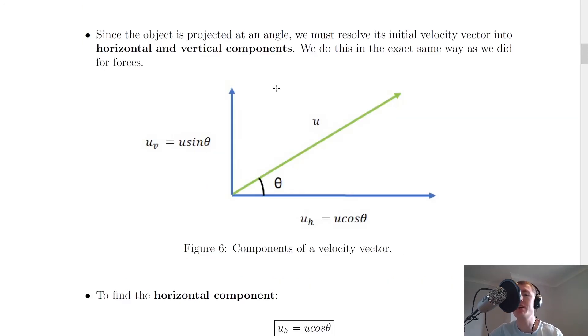Now for this specific case when we think about the initial velocity of the projectile, it's not going to be as easy as what we've seen previously. It says here that since the object is projected at an angle, we must resolve its initial velocity vector into horizontal and vertical components. We do this in the exact same way as we did for forces. So you should remember that we resolved force vectors into their horizontal and vertical components and we're going to do the exact same for the initial velocity now.